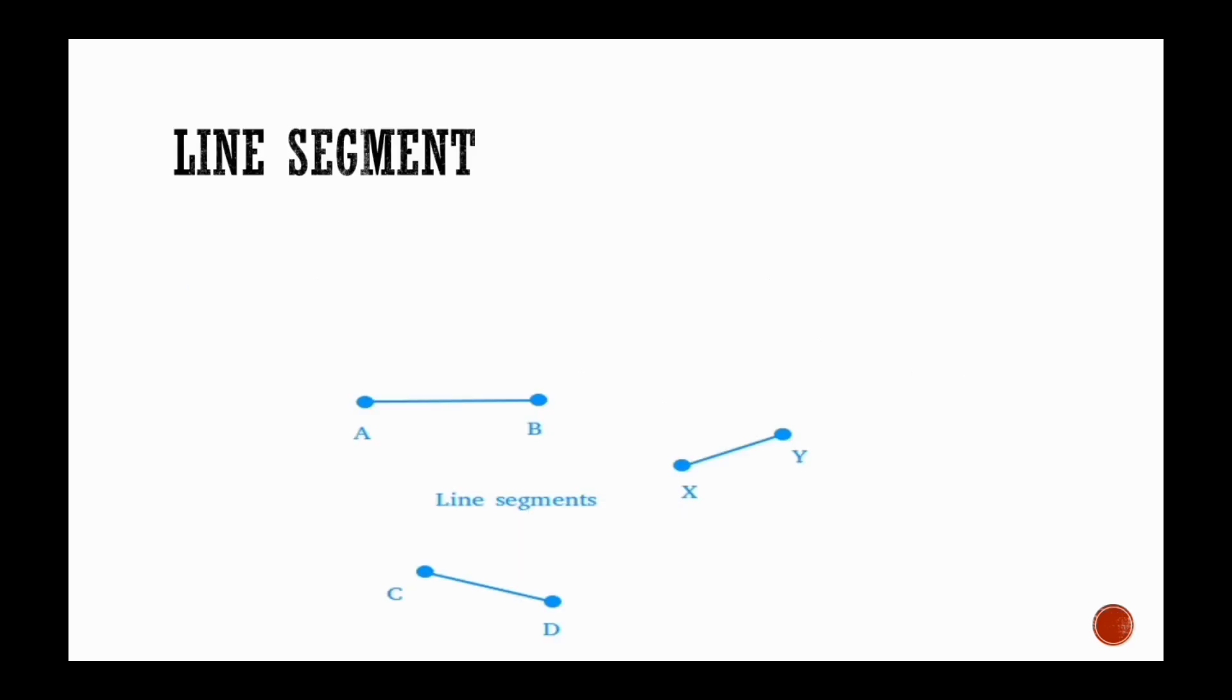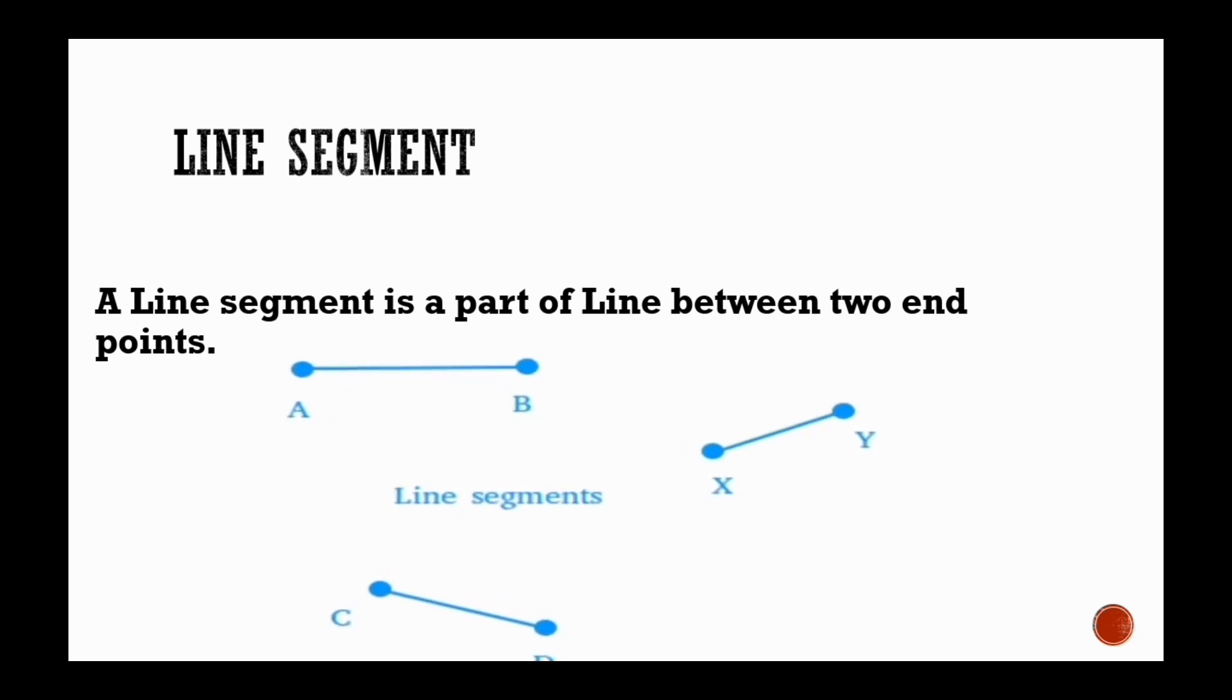Line segment. A line segment is a part of line between two end points. It means the length of a line segment is fixed.